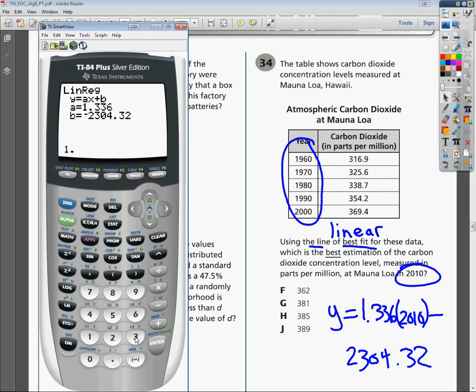So, 1.336. And then my parentheses, I'm going to put 2010. Minus, because it says negative up here. That makes your life easier if you just put a minus in. 2,304.32. Hit enter. And you get 381.04 which looks suspiciously like G.